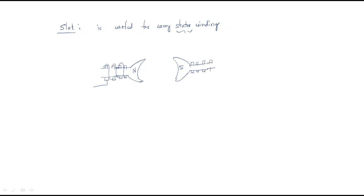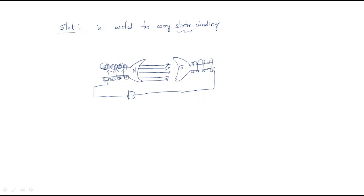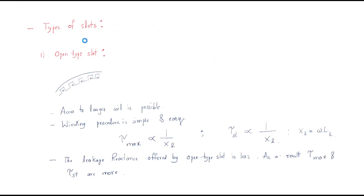These slots are useful for carrying the winding. Whenever we give an AC supply, currents will flow and these currents will produce flux. From the right-hand thumb rule, flux always ranges from north pole to south pole. If there are no slots, there is no winding, and without winding there is no flux. Our intention is to provide that flux, which is why we discuss slots.